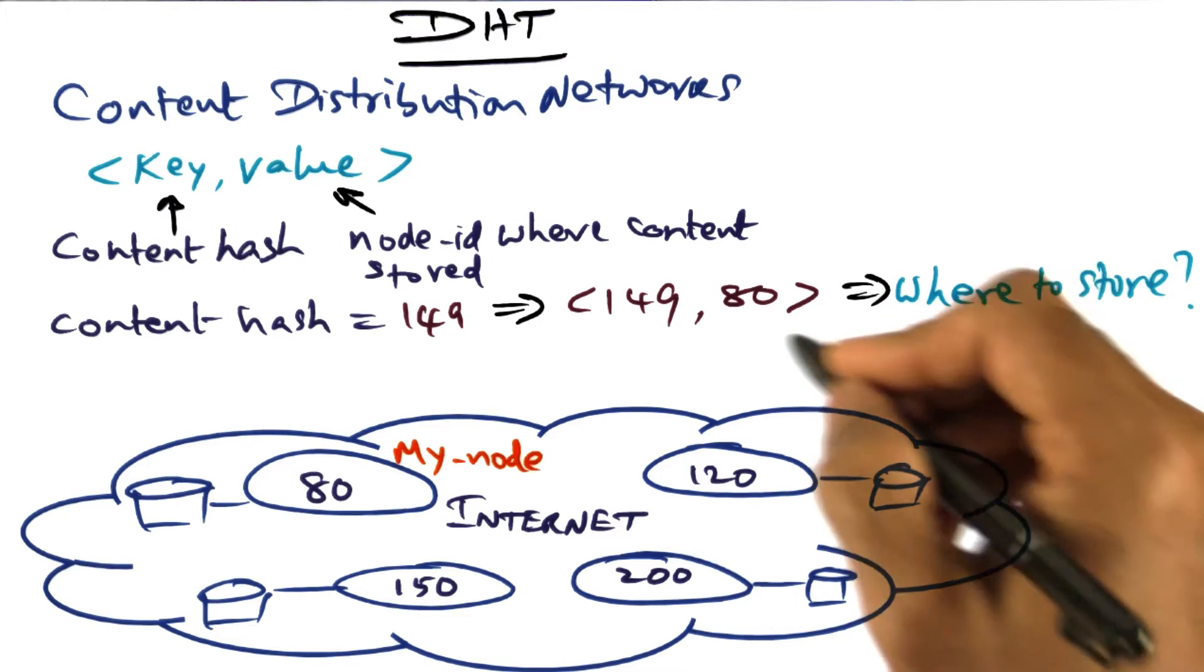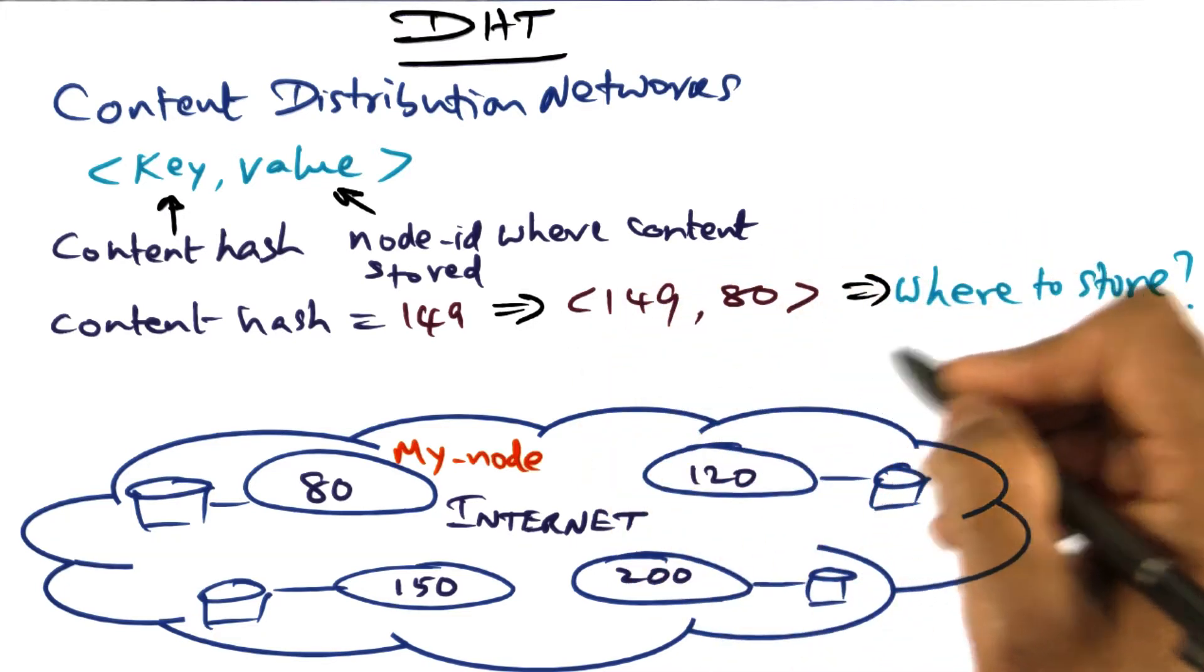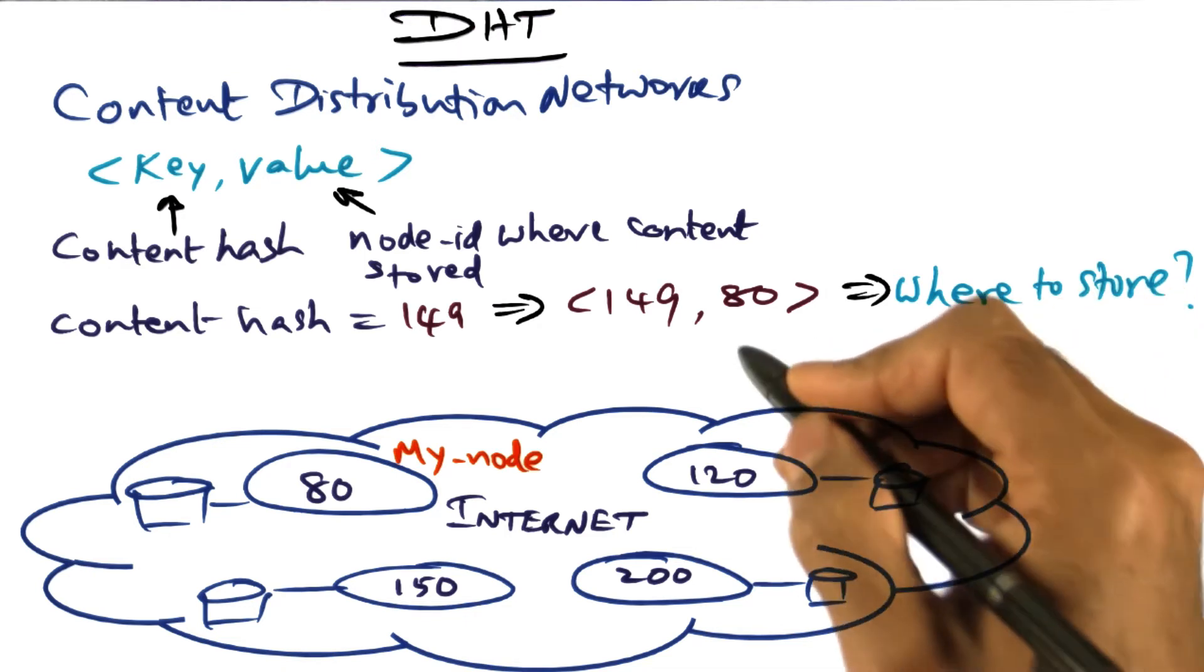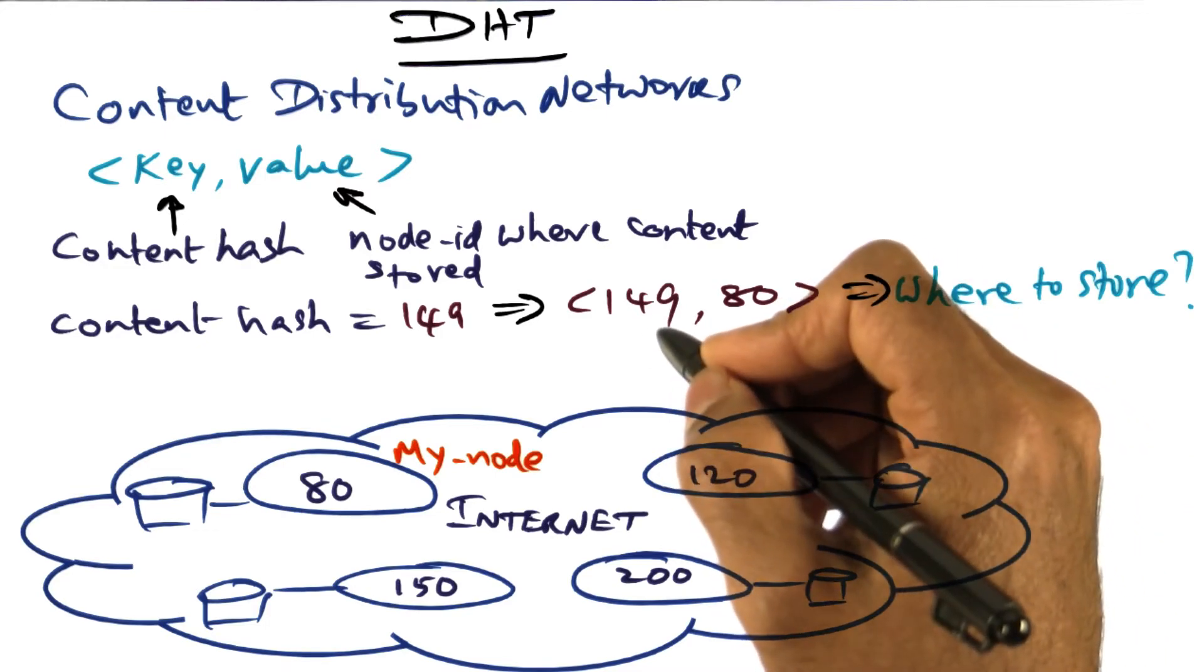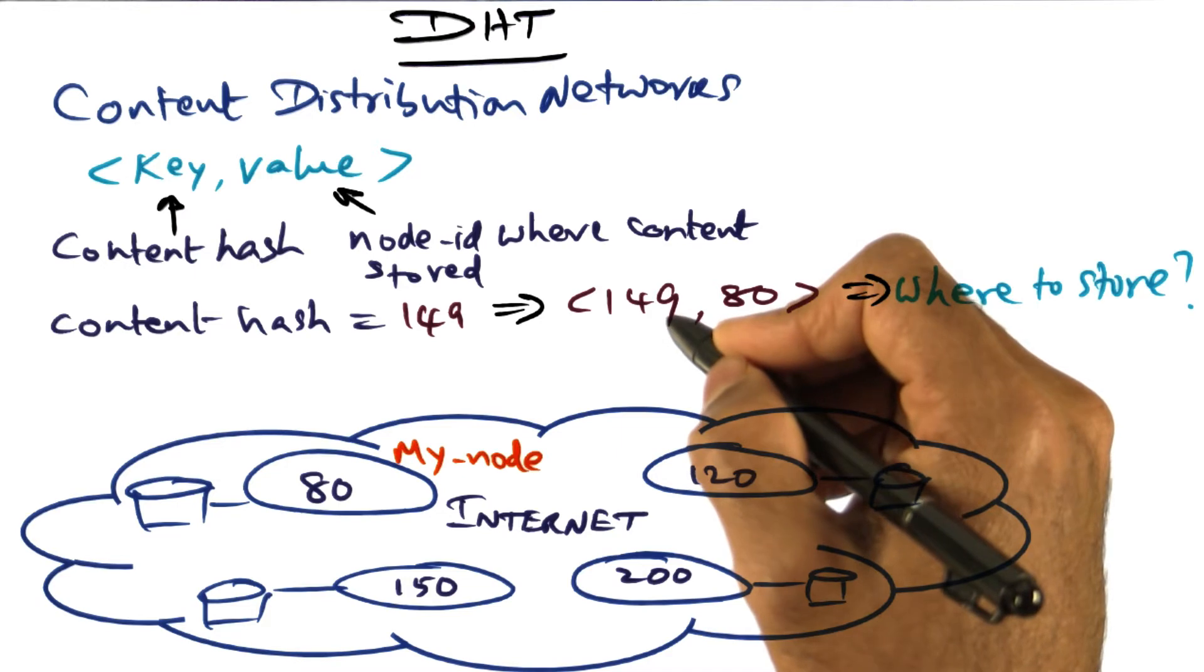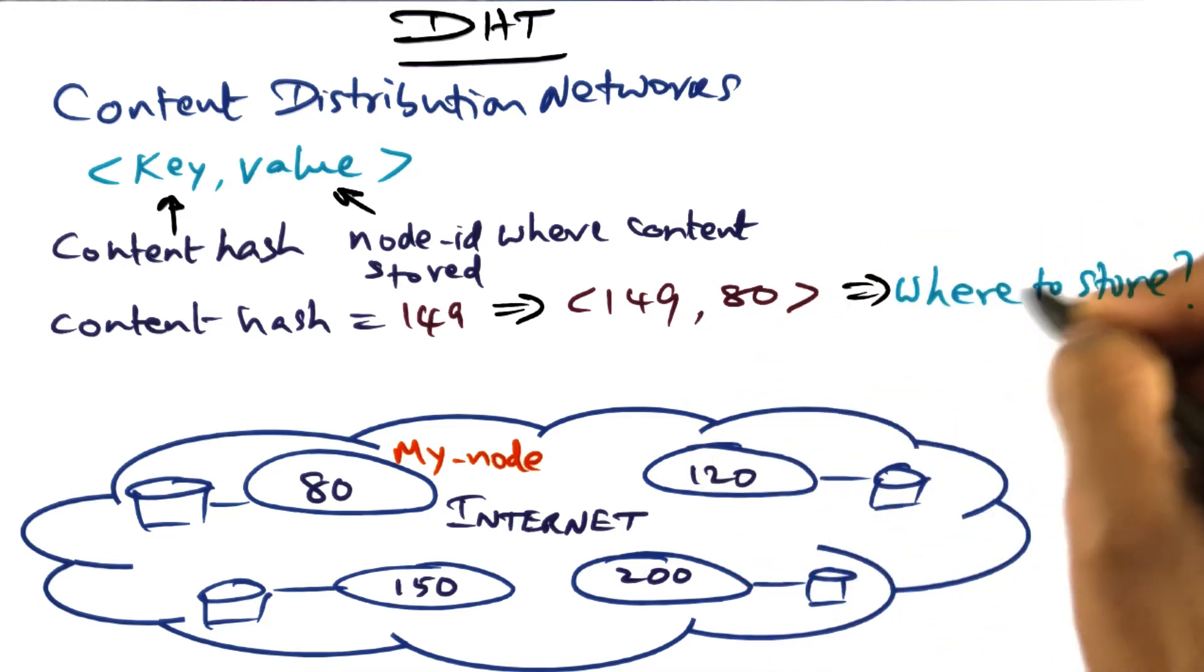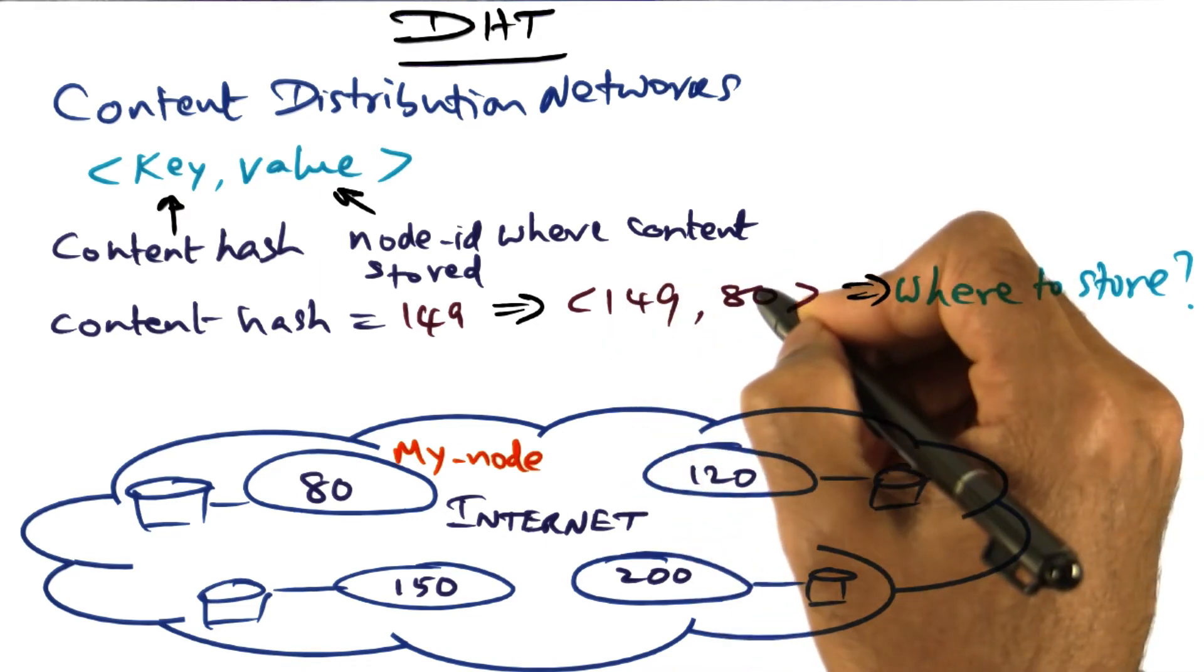Now the question is, where to store this key value pair so that anybody can discover it? If they're looking for Kishore's India trip, maybe I published the fact that Kishore's India trip unique name is 149 somewhere. And so now if anybody wants to find a way of locating the server from which they can download the content, they need to get this key value pair.